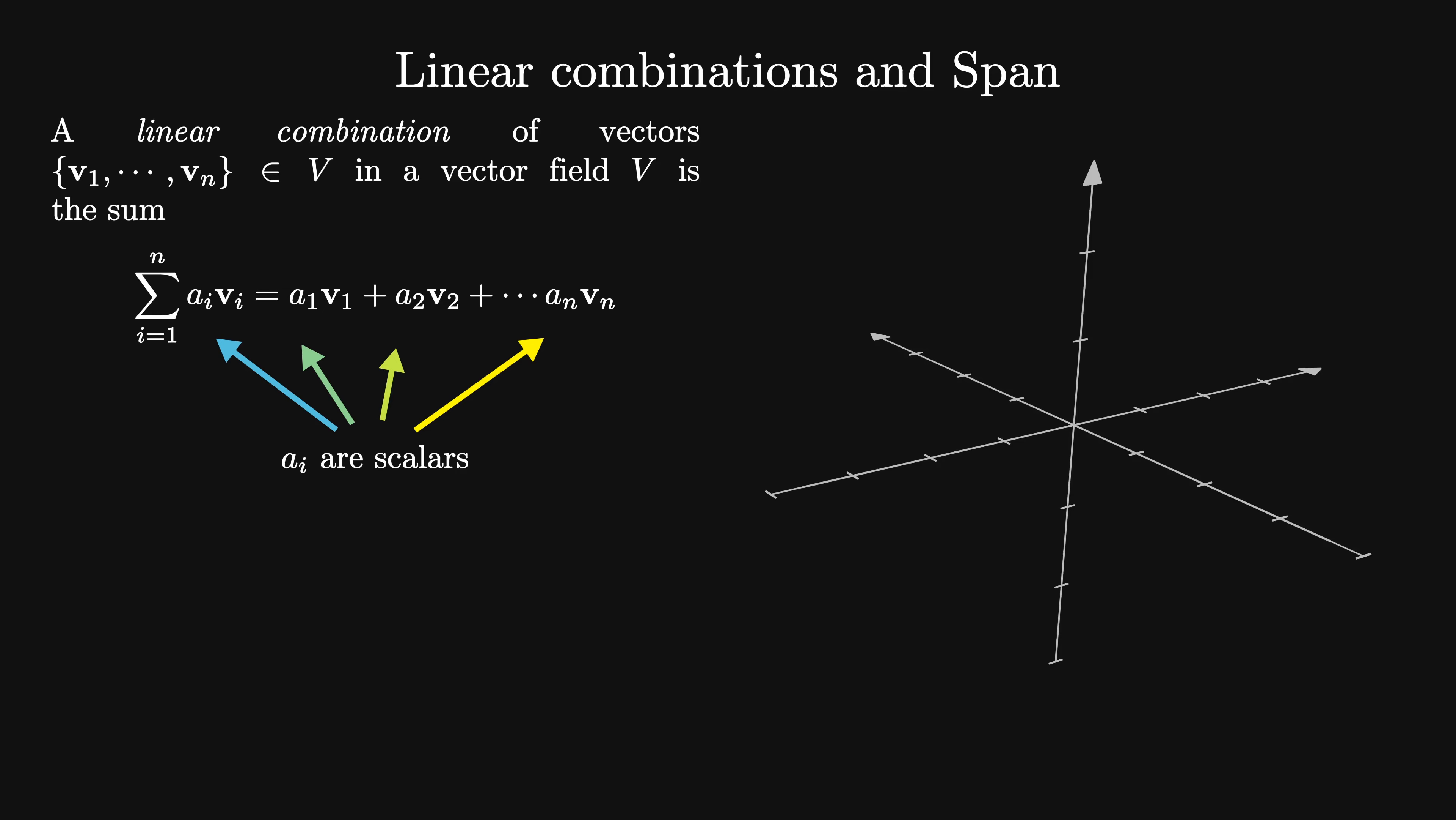I'll present two different but equivalent ways of thinking about the span. First, the span of a set of vectors S in a vector space is the intersection of all subspaces that contains S.